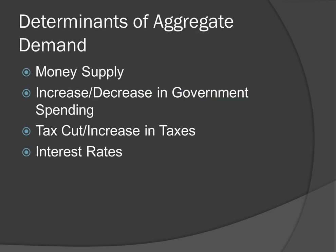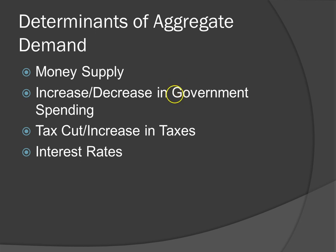Aggregate demand can also change with a few variables. A change in money supply can change aggregate demand — an example of monetary policy, which will be explained in a later chapter. A change in government spending can also change AD, or aggregate demand, because there will be a change in the overall demand for goods and services. This is known as fiscal policy, which will be explained later as well. Tax cuts and increases can also change AD, another example of fiscal policy. And lastly, interest rates will change aggregate demand.